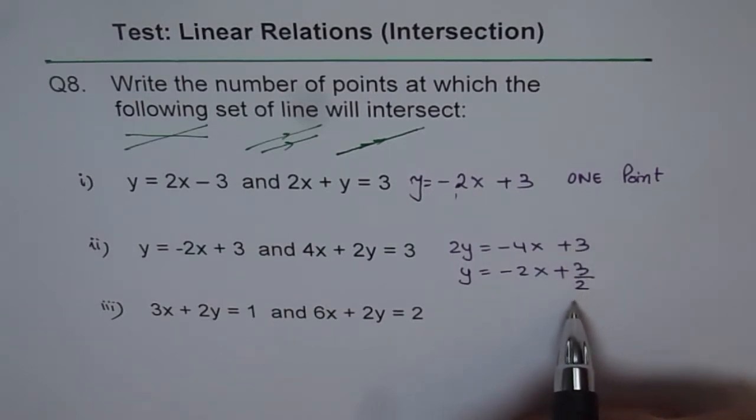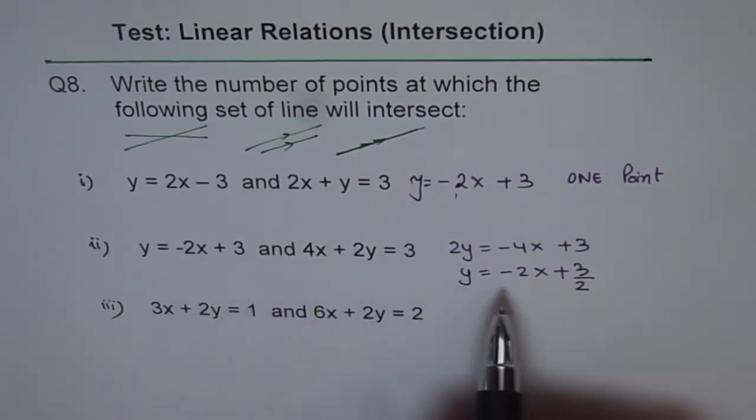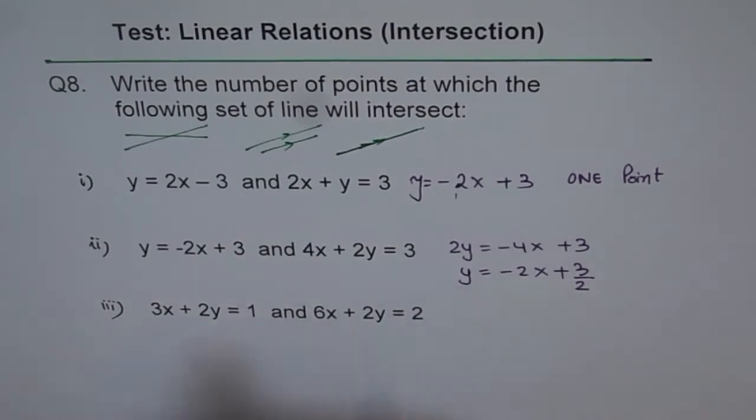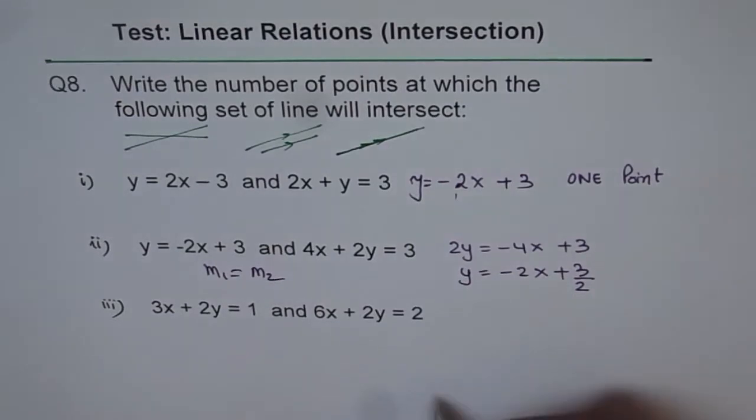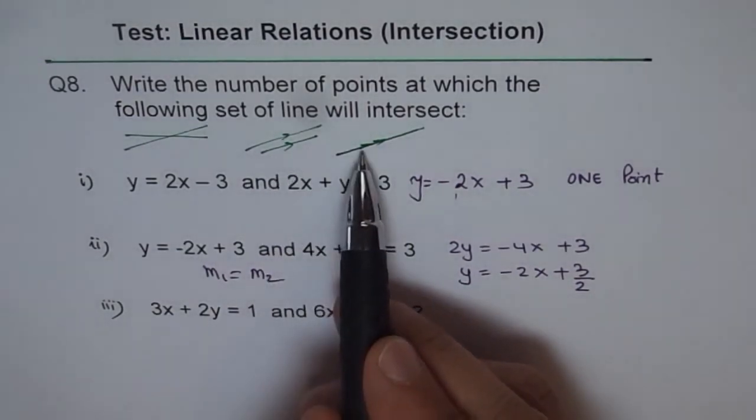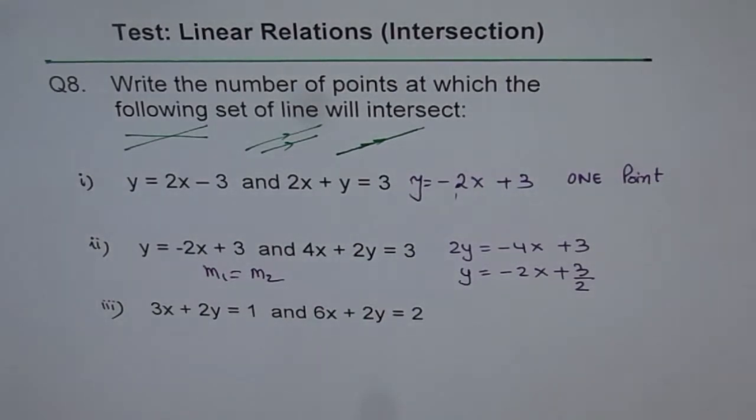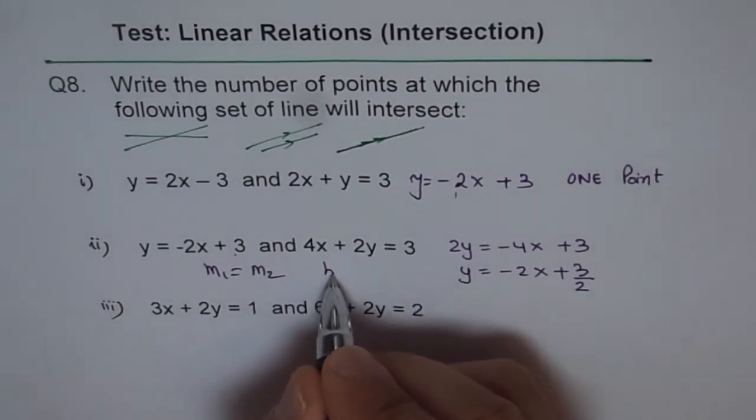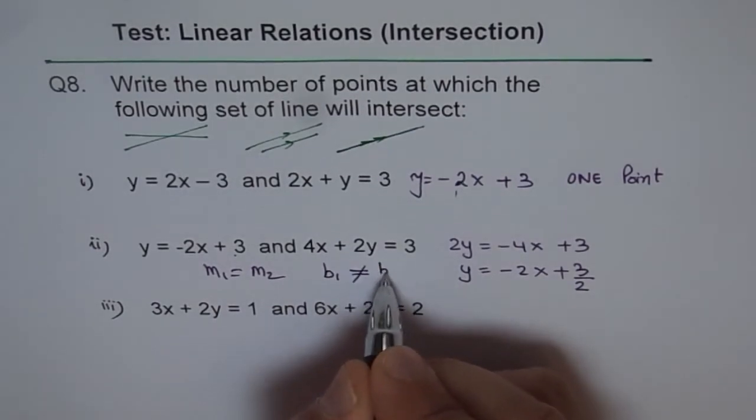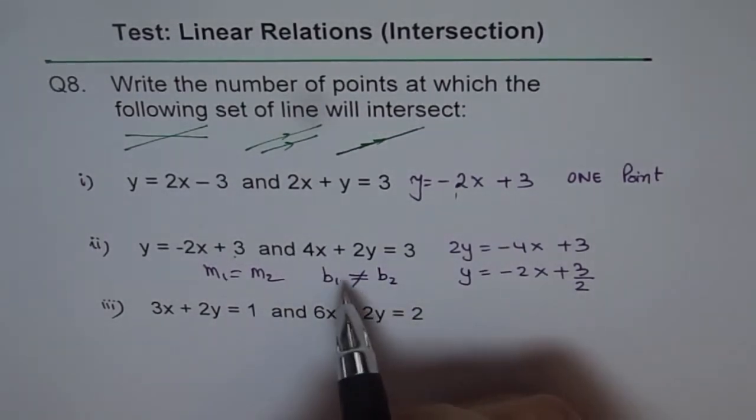And 3 divided by 2 is 1.5. Now if I analyze these two lines, they have same slope. So slope m1 is equal to the slope of the second line. So that means they could be either parallel or overlapping. How will you check that now? Then check the y-intercepts. They are different. So b1 is not equal to b2.